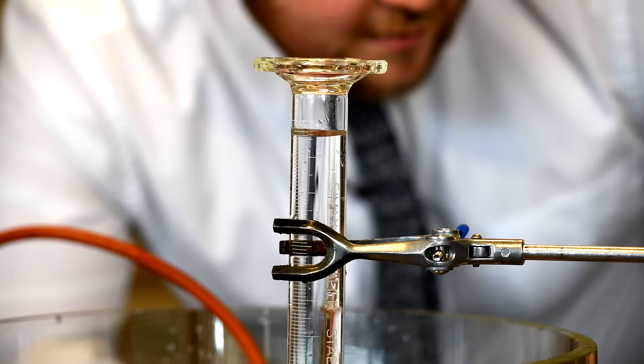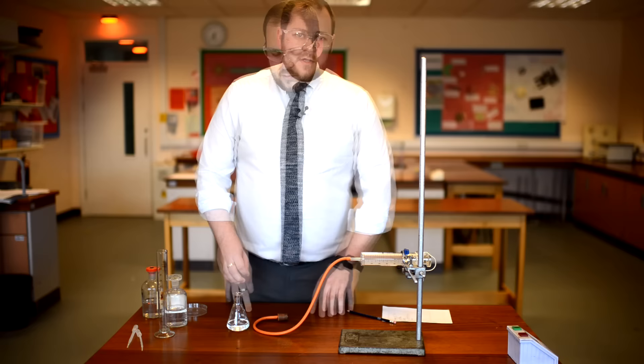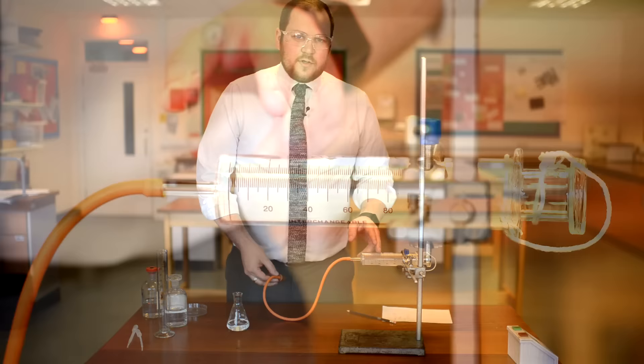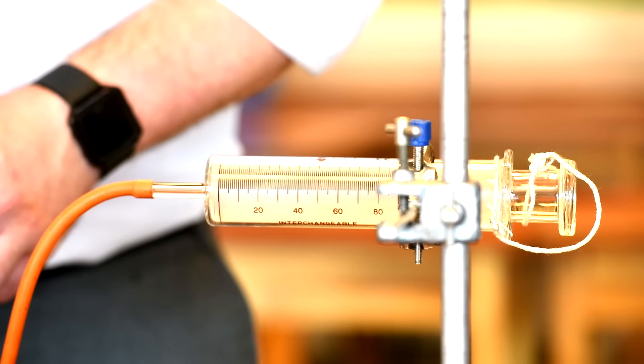An alternative method is to use a gas syringe. We're still using a conical flask, bung and delivery tube with the hydrochloric acid and magnesium. However, you're measuring how much gas fills up the gas syringe. Once again measuring the amount of gas produced every 10 seconds.